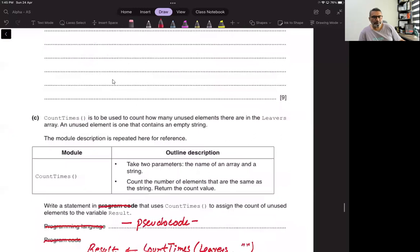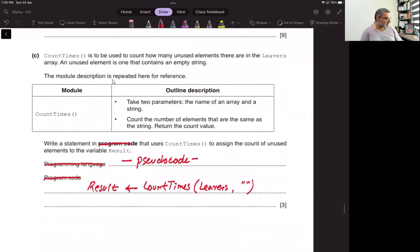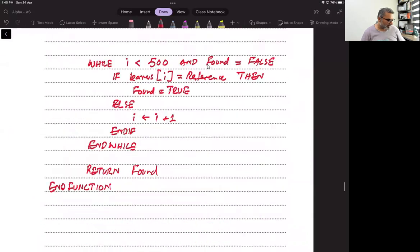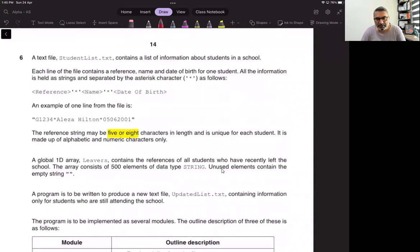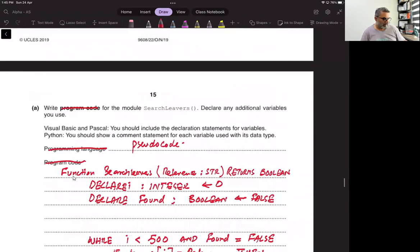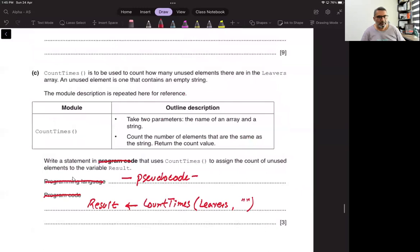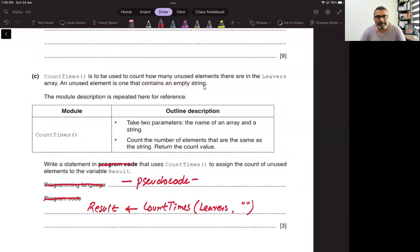Next question. It is part C, question six, part C. Count times is to be used to count how many unused elements there are in the leavers array. An unused element is one that contains an empty string. And they said earlier that this array actually contains empty string by having nothing there. So just an empty string.